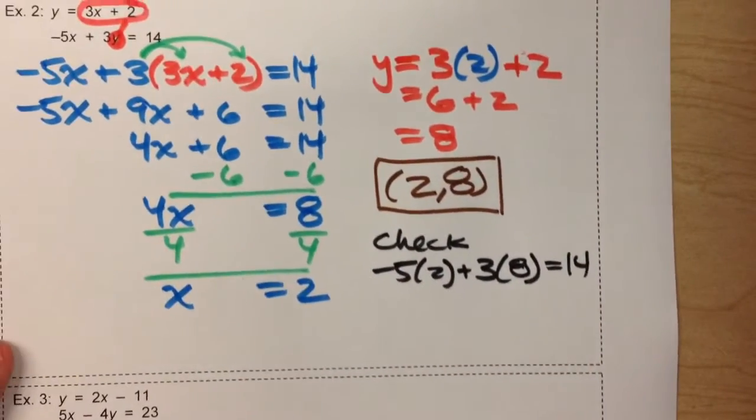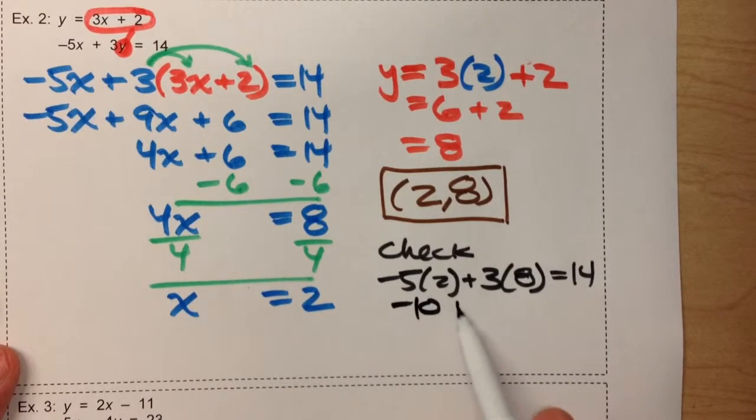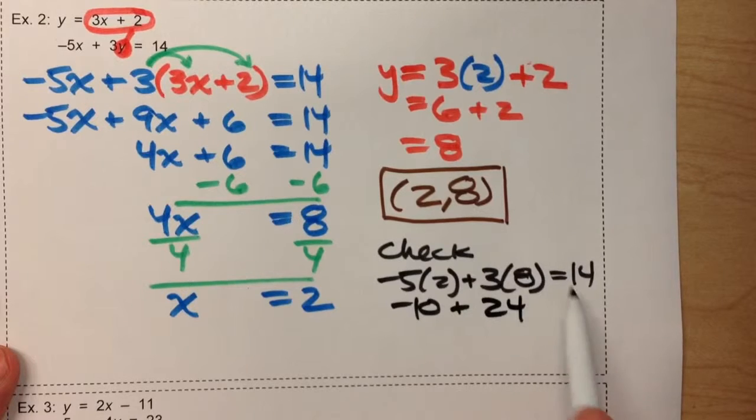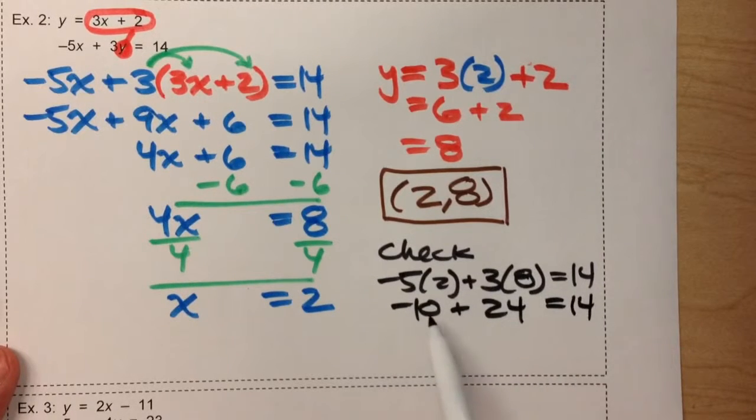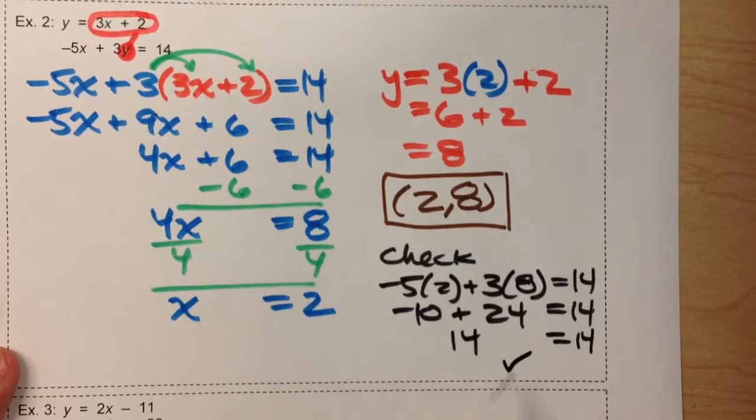If it does, then we know we're good. Negative 5 times 2 is negative 10. 3 times 8 is 24. Negative 10 plus 24 is 14. And look, that's what we needed it to be, 14, so it checks out.